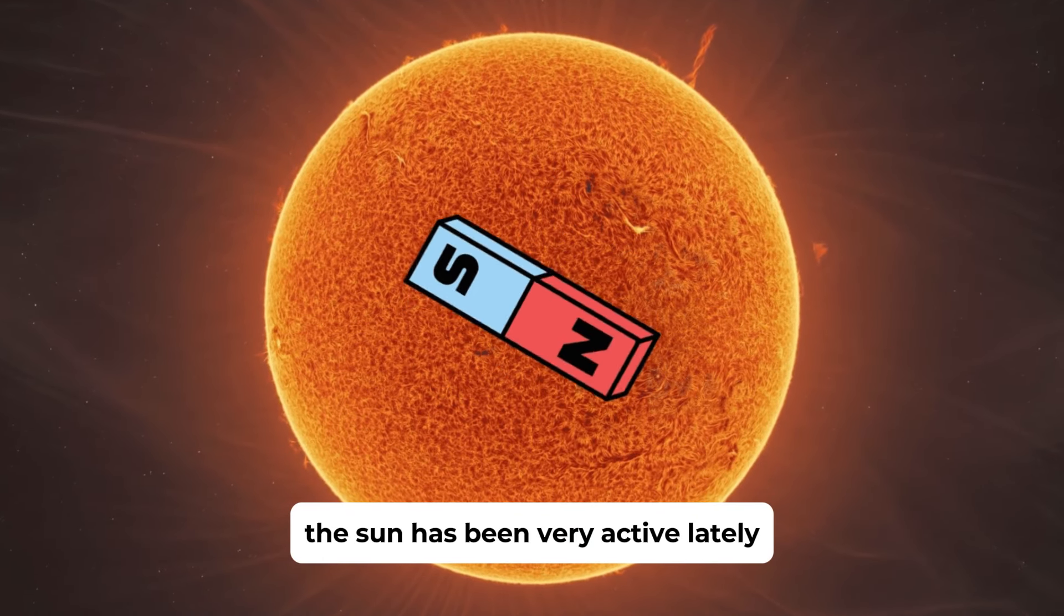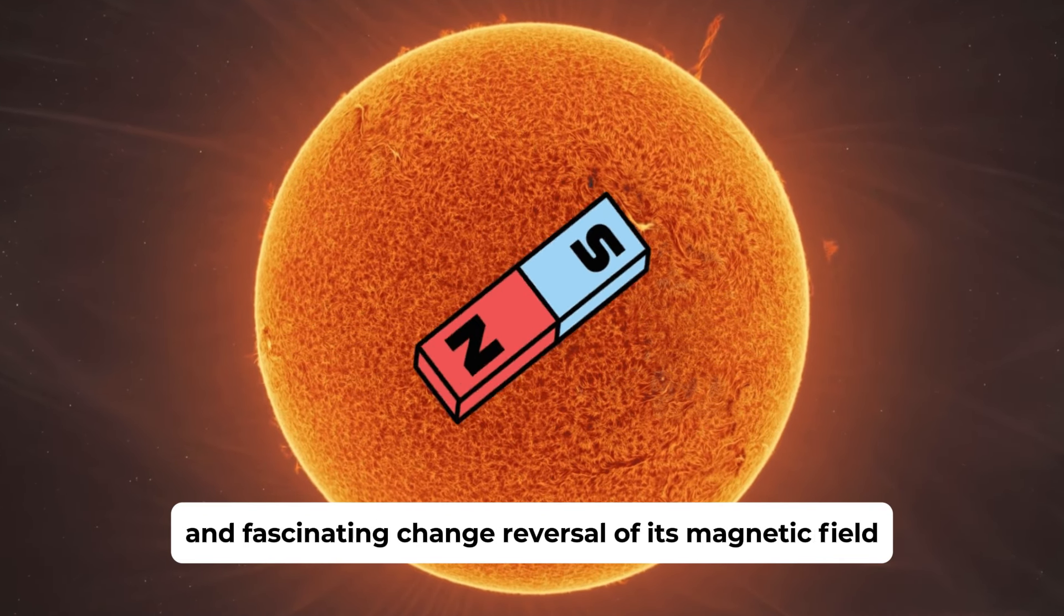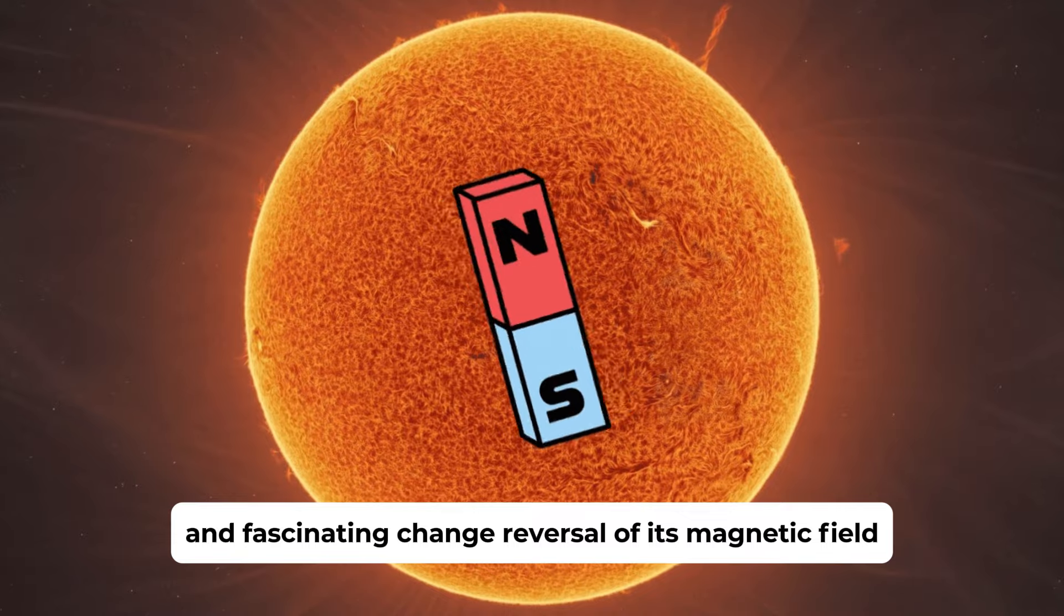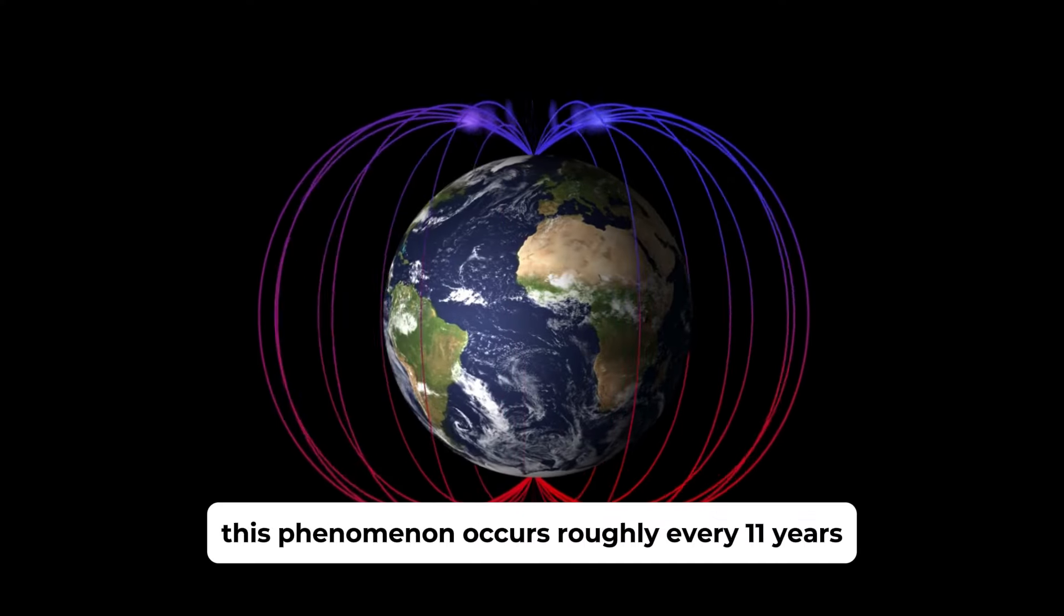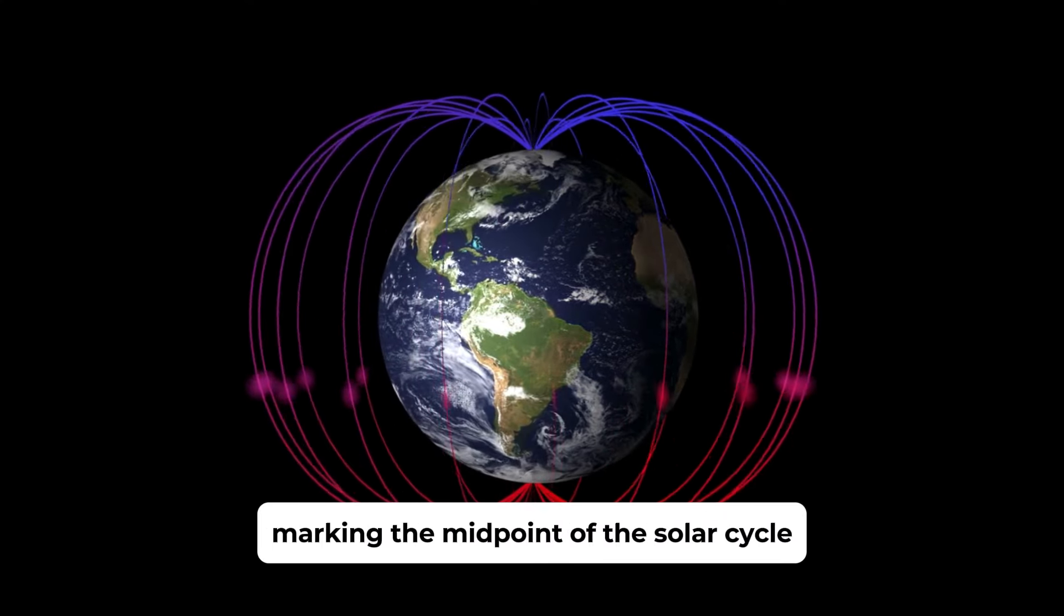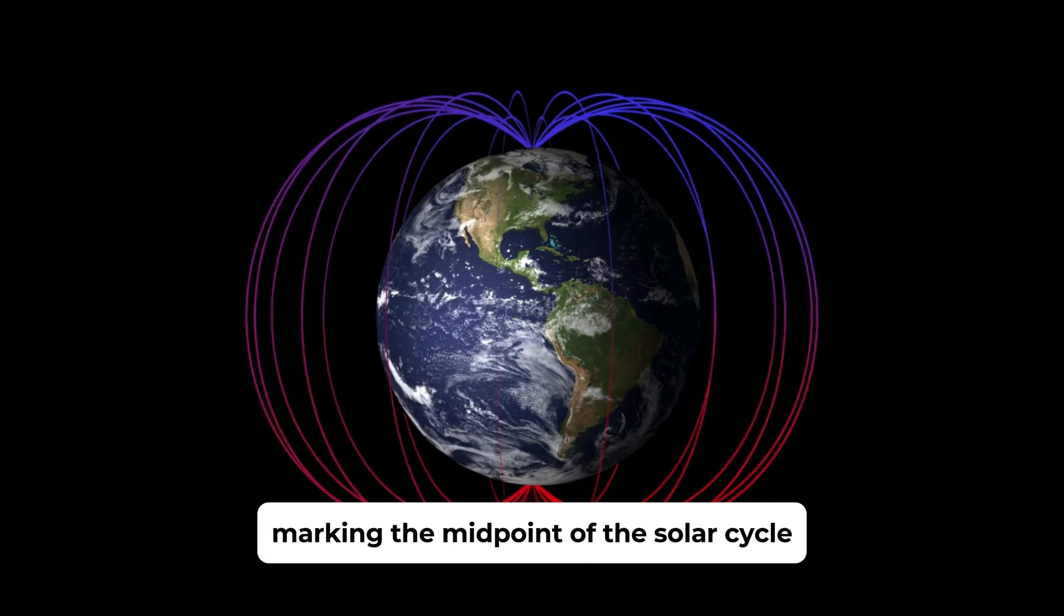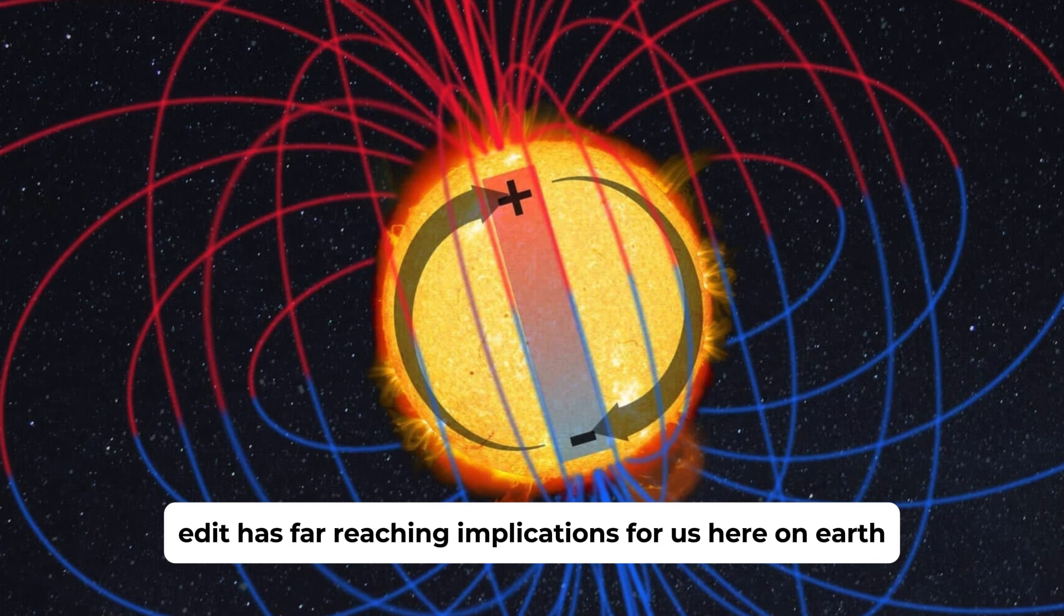The Sun has been very active lately and is about to undergo a critical and fascinating change: reversal of its magnetic field. This phenomenon occurs roughly every 11 years, marking the midpoint of the solar cycle, and it has far-reaching implications for us here on Earth.